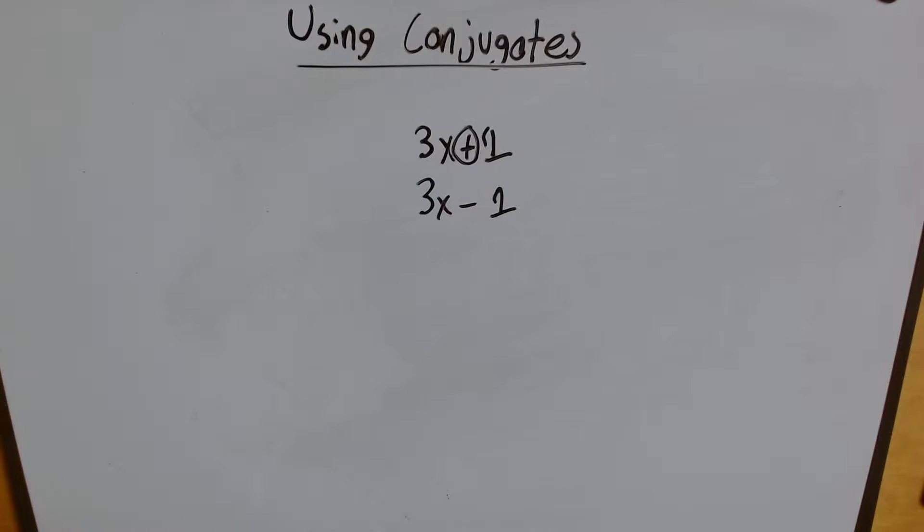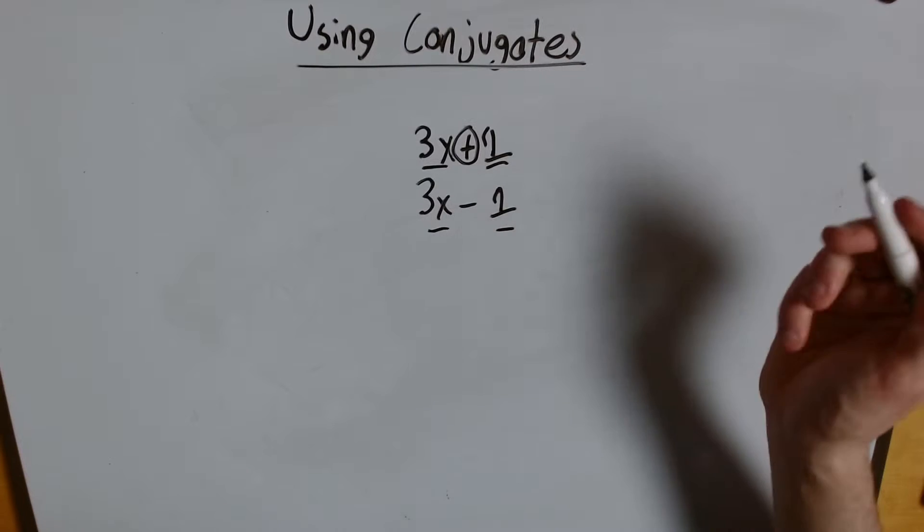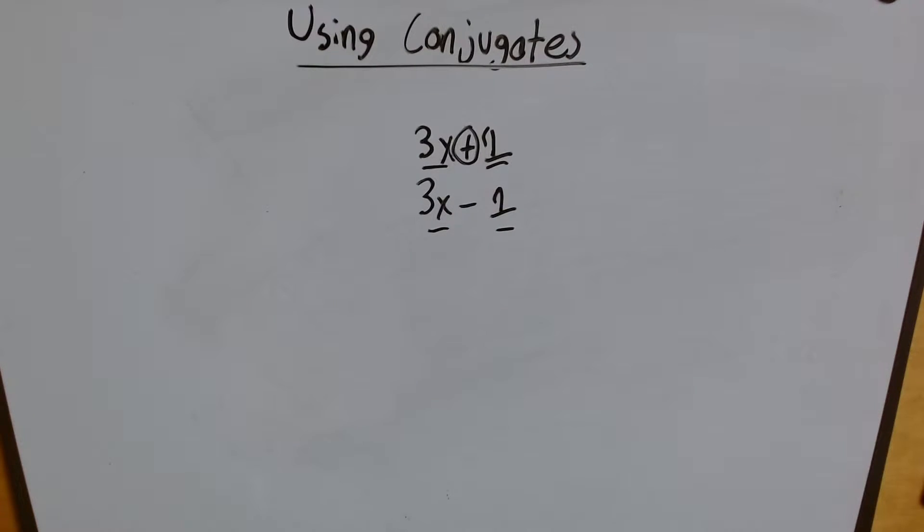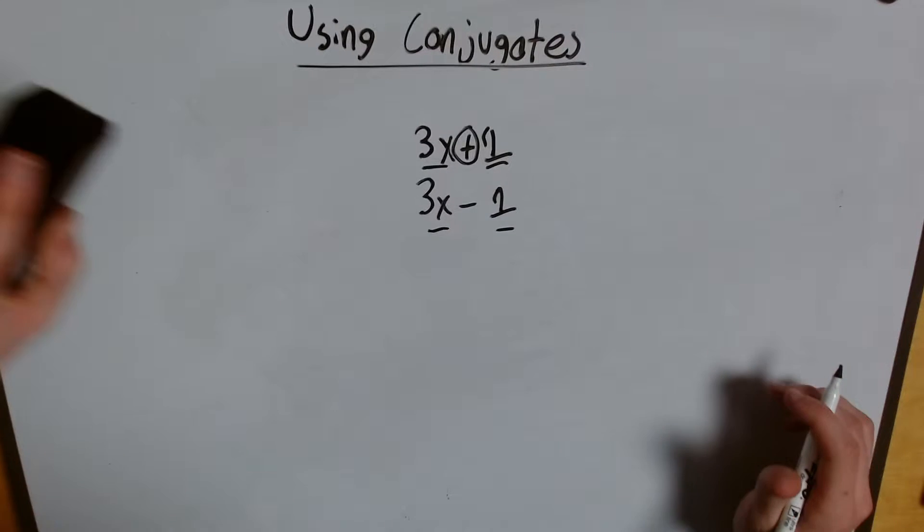We use this only when dealing with expressions with two terms, which we call binomials. Bi meaning 2 and no meaning a number term. So let's see some more examples of conjugates.